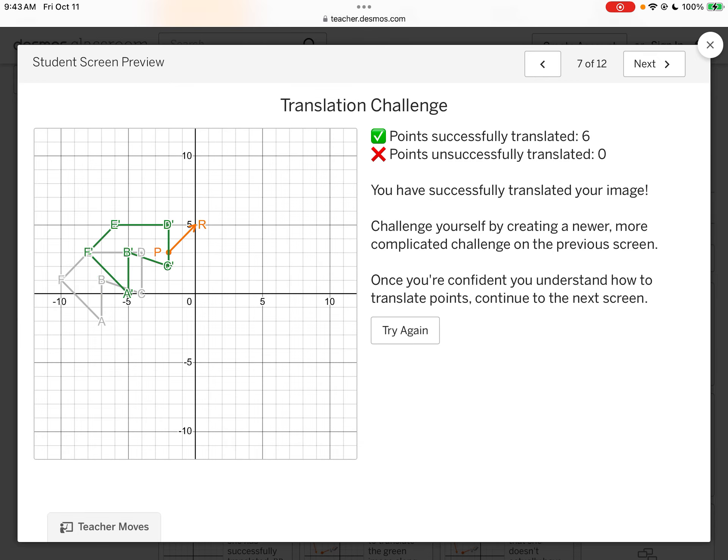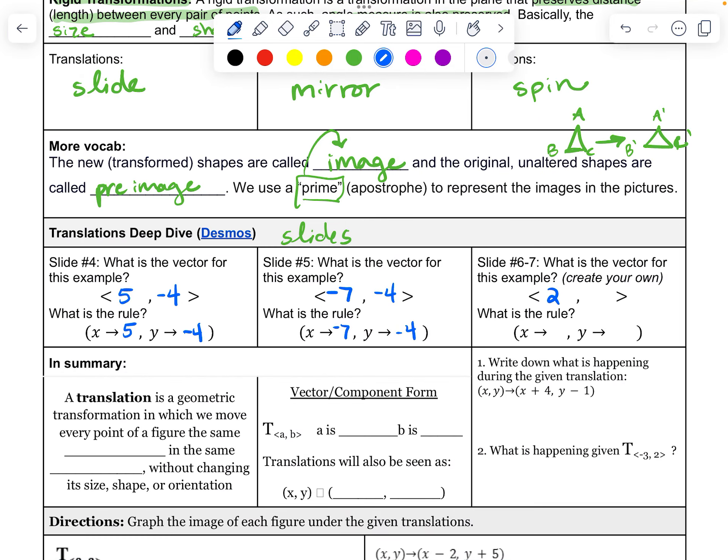But you see what we're doing here? Just up 2, over 2, because that was how I made the vector. There we go. Finally got it. Love it, love it, love it. So mine was up 2, over 2. Plus 2, plus 2. Gorgeous.